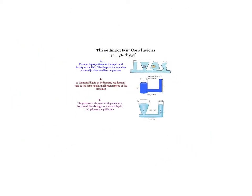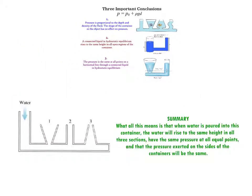Then, to summarize all this, then, if we had this container here and we filled it with water and each of these spots, 1, 2, and 3, are open to the air, okay, water will rise to the same height in all three sections, have the same pressure at all equal horizontal points, and that pressure would be exerted on the sides of the containers would be the same. Now, these three points are really the kind of the standard conditions for hydrostatic equilibrium.